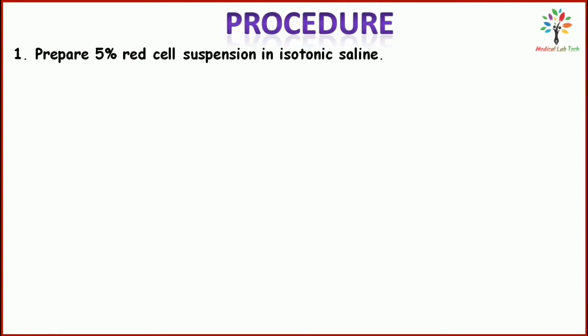Now let's move on to the procedure. Prepare a 5% red cell suspension in isotonic saline. We prepare this because we need to find the antigen on the red cell membrane, so the red cells have to be tested. Plasma or serum must be removed because it contains antibodies and protein substances that would disturb the agglutination reaction. We wash the red cells with isotonic saline, which also removes fibrinogen that may cause small clots.